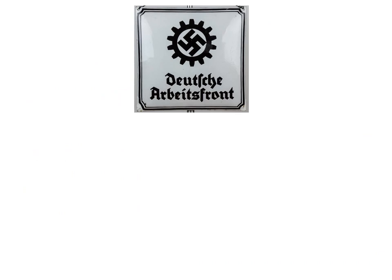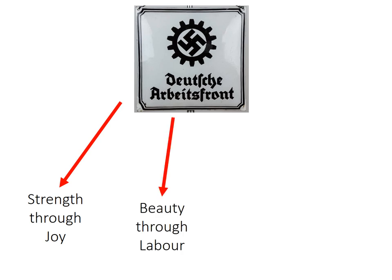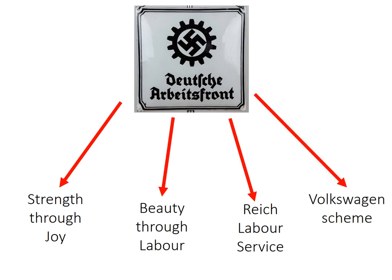When the Nazis took power, they got rid of the trade unions and replaced them with an organisation called the Deutsche Arbeitsfront — the German Labour Front, or DAF. The German Labour Front had four main functions: Strength Through Joy, Beauty Through Labour, the Reich's Labour Service, and the Volkswagen scheme. All four fell under the wing of the Deutsche Arbeitsfront, which supposedly replaced trade unions to improve the lot of workers — and again, there's a but.